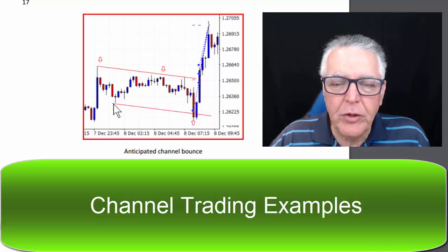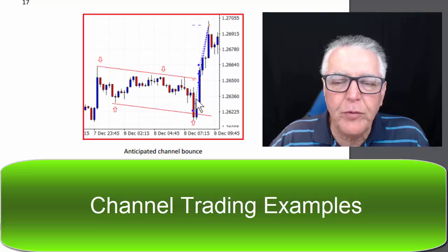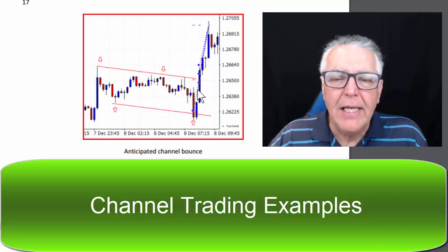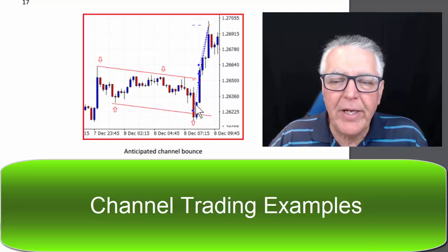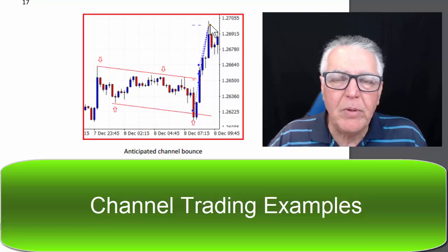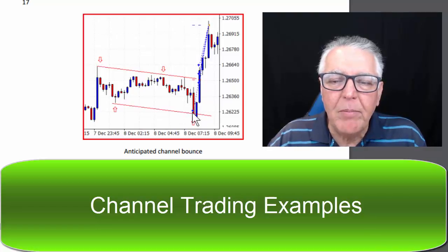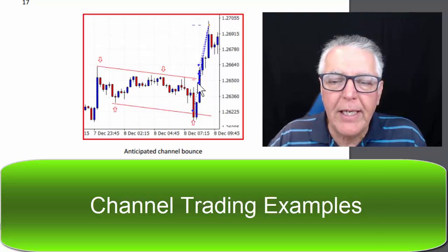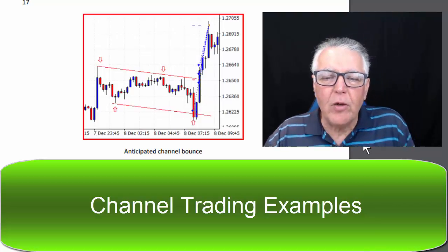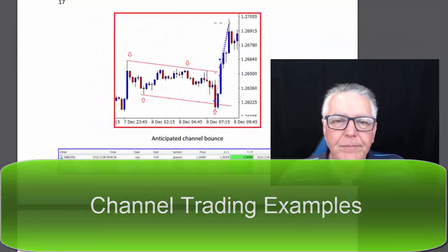Here's an example of using channel trading to provide the entry but going way beyond the expected target. We have a one-two-three bounce, four bounce, and the four-to-five bounce was traded. This double-in-a-day trade went all the way up there to double the account — so the entry was the main motivation for using channel trading, but it did break through and go a lot further.